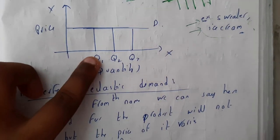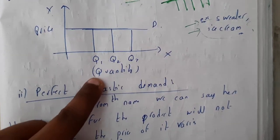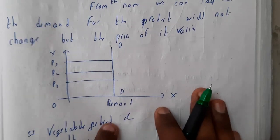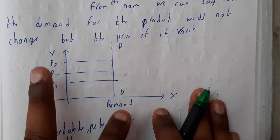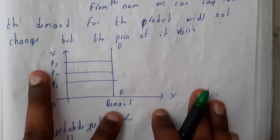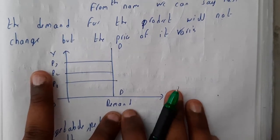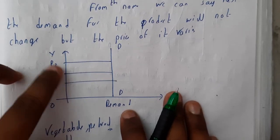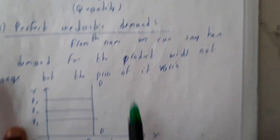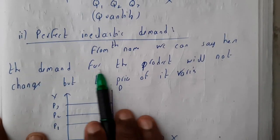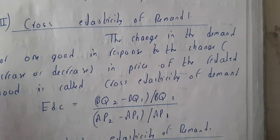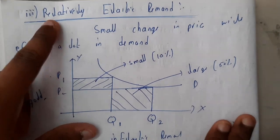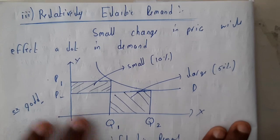In perfect inelasticity, the demand or quantity is constant while the price is changing. So demand remains constant but the price varies — p1, p2, p3. The best example for this is vegetables. From the name we can say the demand of the product will not change but the price varies.